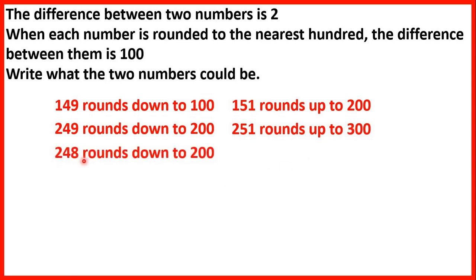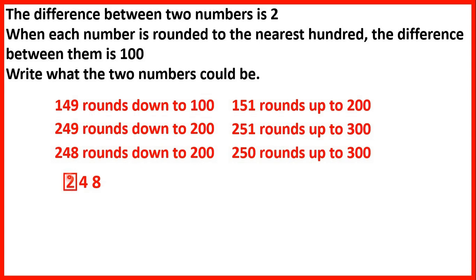We could also have 248 and 250. 248 rounds down because its tens digit is 4 or less, so the hundreds digit stays the same. But 250 rounds up because looking to the right of the hundreds digit we have a 5, so we round up and the 2 in the hundreds turns into a 3. So there are lots of possible solutions for this question.